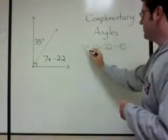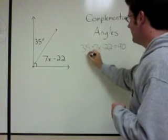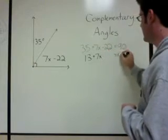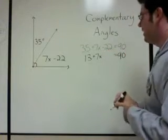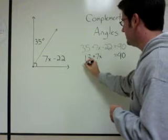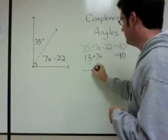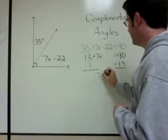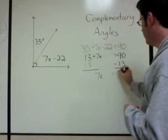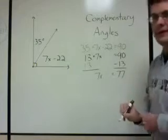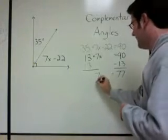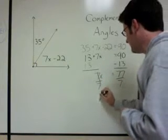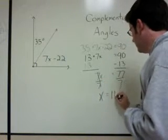So first let's combine like terms here. So we have 13 plus 7x equals 90. Now I'm going to subtract 13 from both sides. Minus 13, minus 13. So we have 7x equals 77. Then the last thing we've got to do is divide by 7. Divide by 7 there, divide by 7 there. X equals 11.